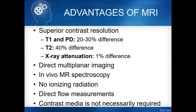MRI has superior contrast resolution. In X-ray, it is difficult to differentiate soft tissues — conventional radiography can only differentiate structures with large density differences, like bone and air. For soft tissues where densities are almost the same, conventional imaging struggles. CT scan shows minor differences between soft tissues, but MRI provides even better differentiation. So when asked which has better contrast resolution, the answer is MRI compared to CT scan.